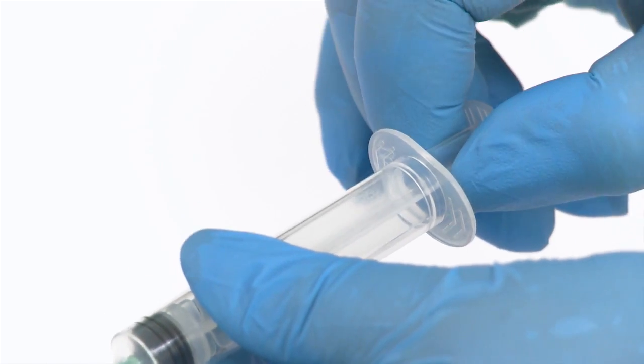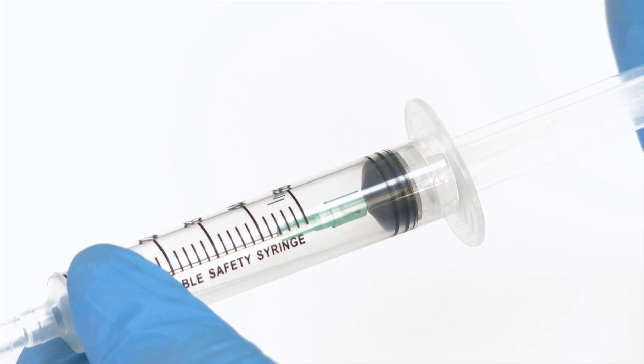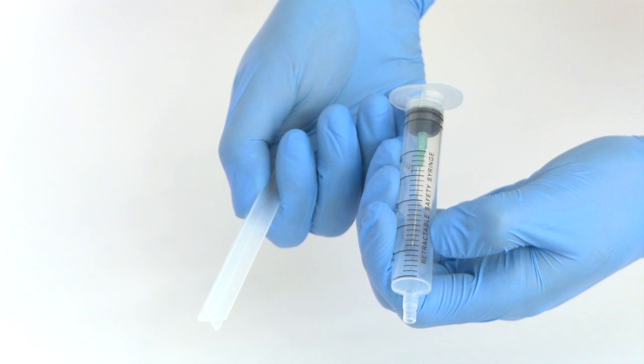After the needle is withdrawn from the patient's body, withdraw the plunger until it reaches the end of the barrel and locks into place. Snap the end of the plunger, housing the needle entirely within the barrel of the syringe.